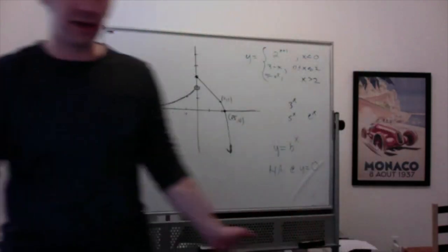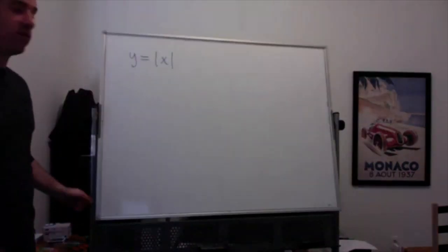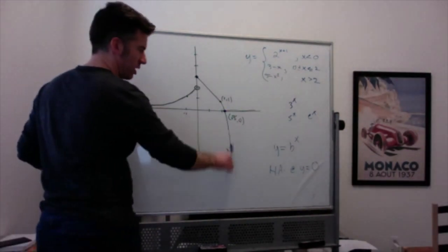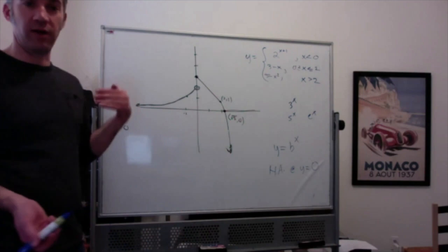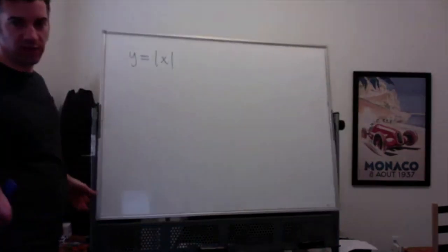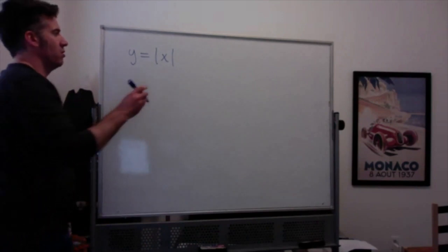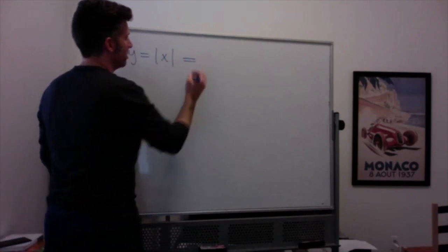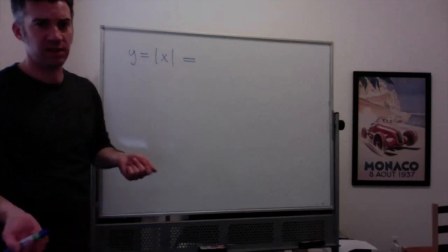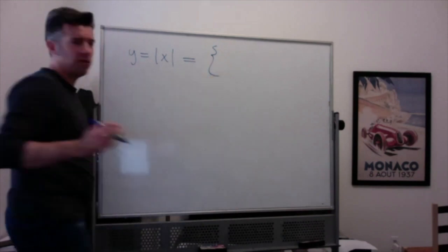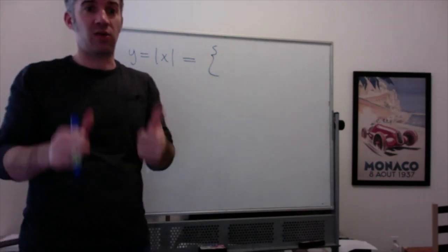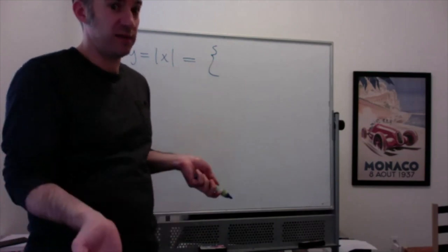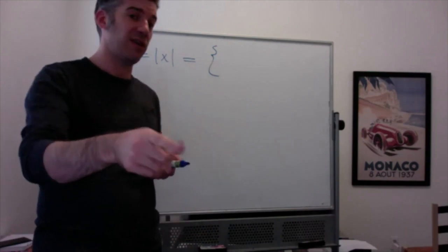Exponential functions — whether 2 to the x plus one, 3 to the x, 5 to the x, or e to the x — all have horizontal asymptotes to the left at y equals zero. There is not a vertical asymptote on that graph; the curve just gets very negative very fast. We will do one with a vertical asymptote after this.